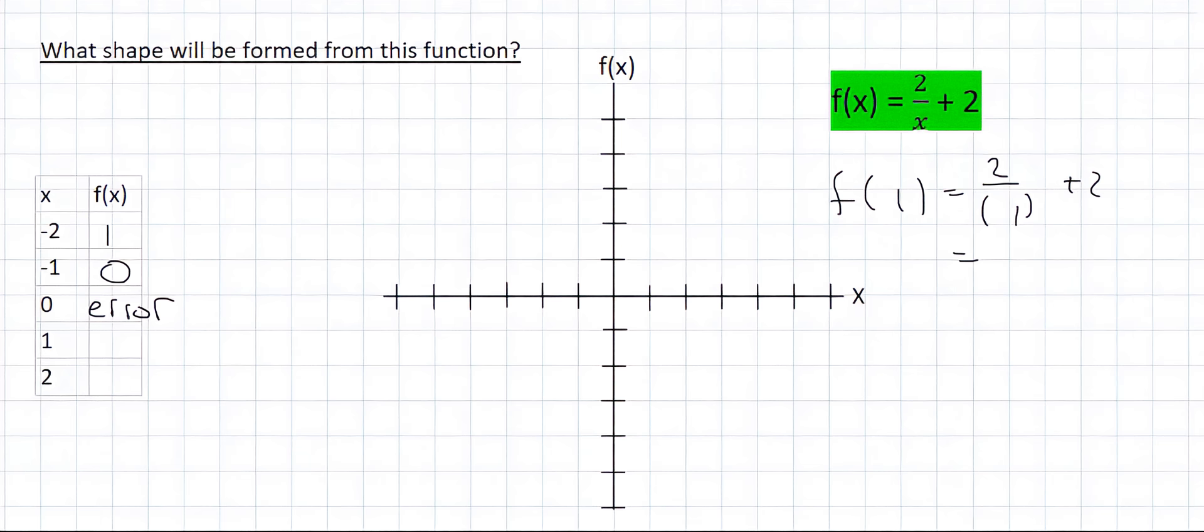There we're plugging in one, and that's going to be two divided by one, which is two, and two plus two is four. And then two divided by two is one, and one plus two is three. So that's going to be the other point.